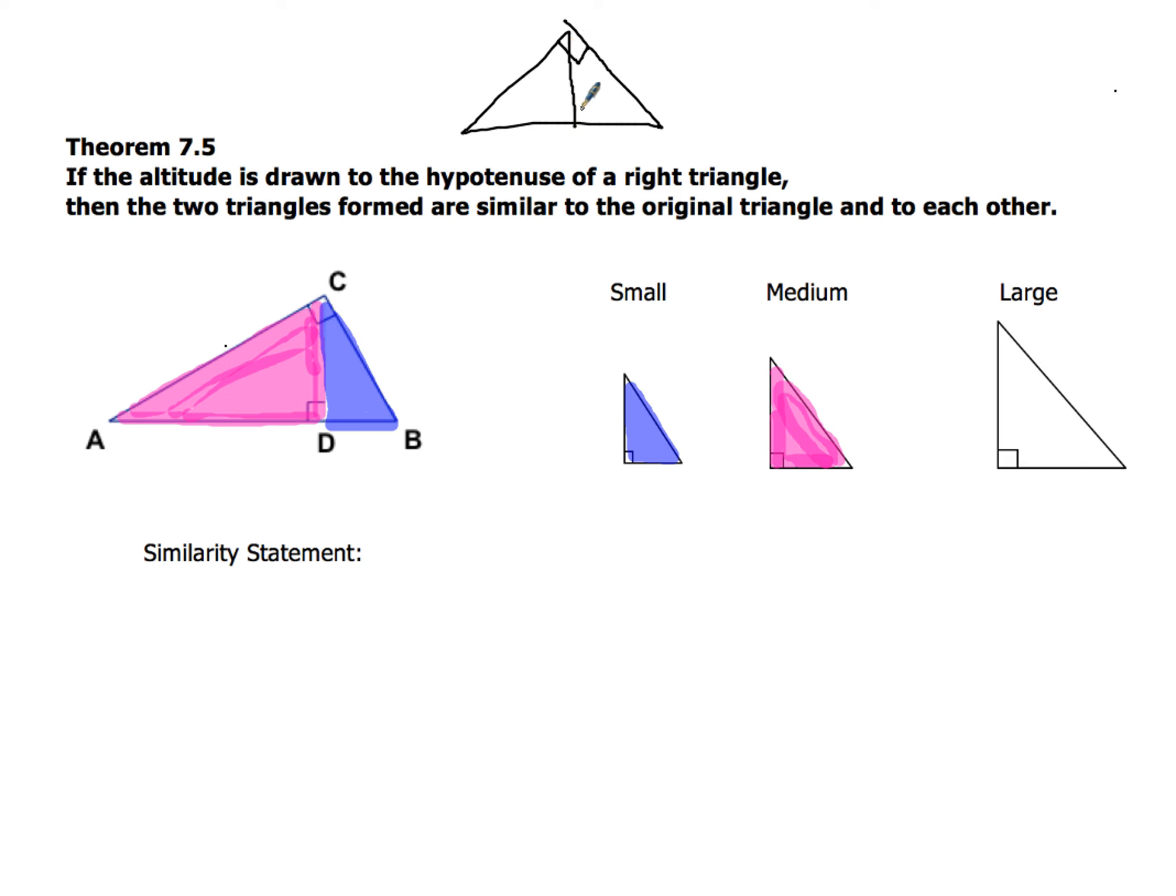The altitude's dropped down, which means it's perpendicular. Now this triangle here, triangle number one, is going to be similar to triangle number two, which is going to be similar to the whole original triangle. That's all that means in a nutshell.